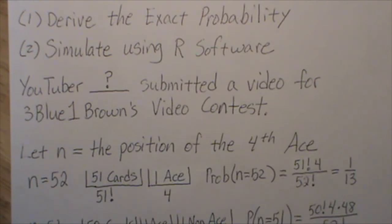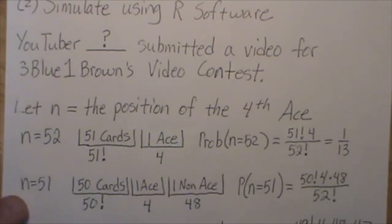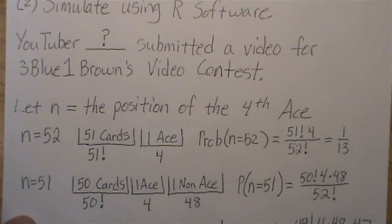And this reduces to 1/13. To me, that's kind of a surprising result. The next time you're playing a card game with shuffled decks, an ace will be on the bottom roughly every 13 shuffles. In my videos, I want to make sure that you leave understanding the calculation, so I'm going to go through some more examples.